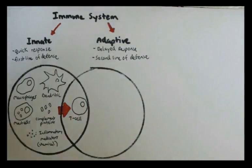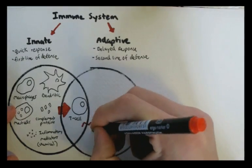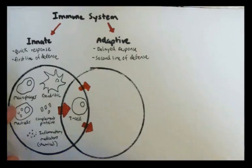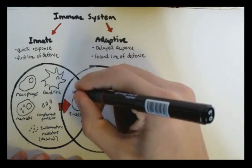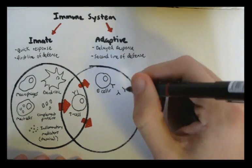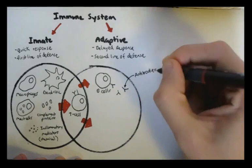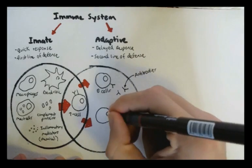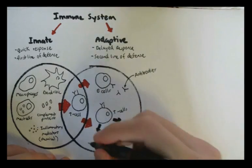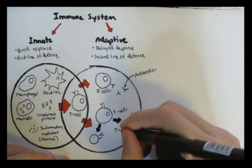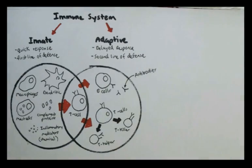The cells of the adaptive immune system are the B-cells, which secrete antibodies, and the T-cells. The T-cells can then differentiate into T-killer cells and T-helper cells. But all these cells are actually connected in some way.